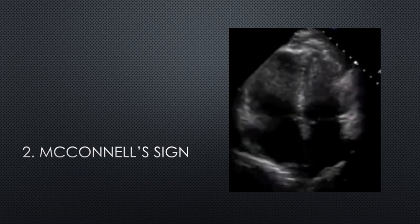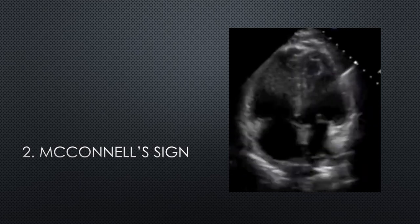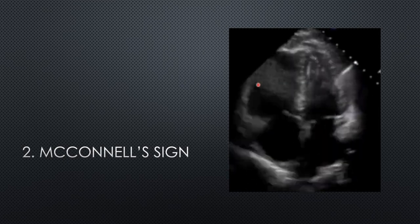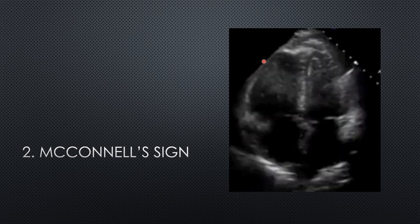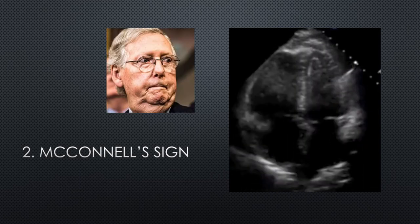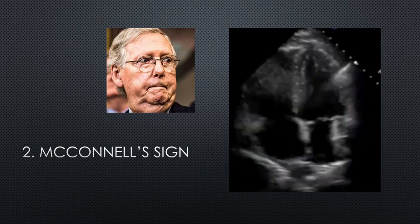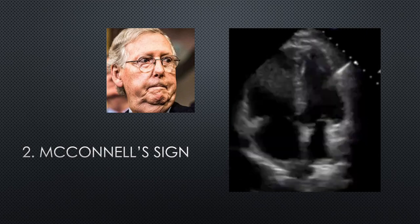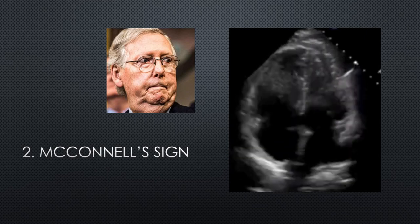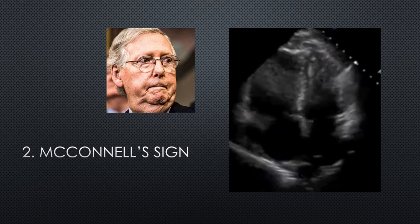The second thing to keep an eye out for is McConnell's sign — where you have RV dysfunction but sparing of the apex. In this image the free wall of the RV is hardly moving, but the apex is moving, winking at us. This is supposedly relatively specific for PE; it was described by McConnell in the 1990s as having a high specificity. Subsequent studies have shown it can occur in other conditions such as RV infarct or chronic pulmonary hypertension, but if you have a high pre-test probability of PE and you see this, it's very likely the patient has an acute PE.